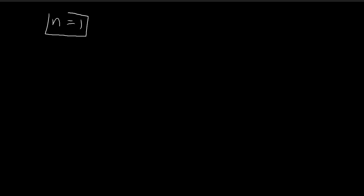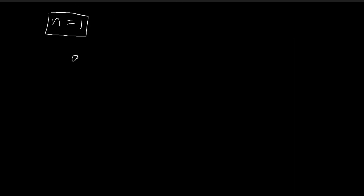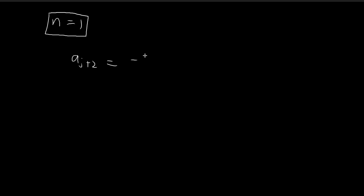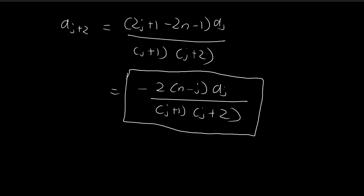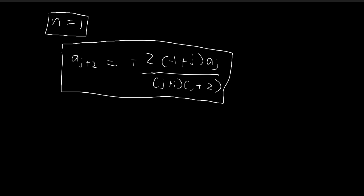Now let's consider n equal to 1. The recursion formula stops when j equals 1. Substituting n equal to 1, the recursion formula becomes: a of j plus 2 equals 2 times (1 minus j) over (j+1)(j+2) times a of j. We start off with a1, which we'll find later using normalization.